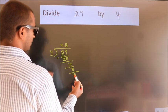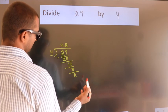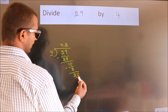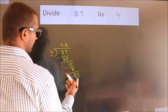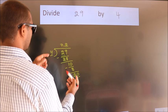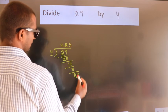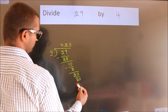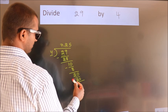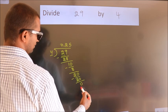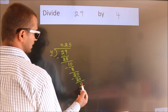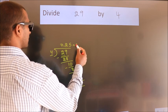After this, we already have the decimal, so directly take zero. So 20. When do we get 20 in the 4 table? 4 times 5 equals 20. Now we subtract and we get zero. We got remainder zero, so this is our quotient.